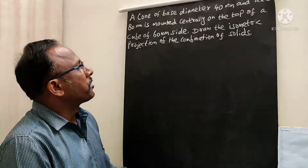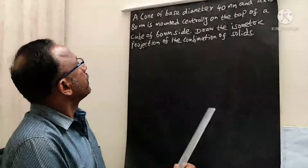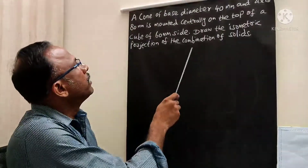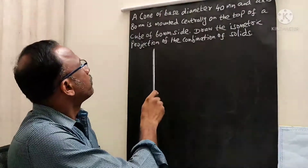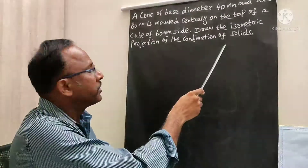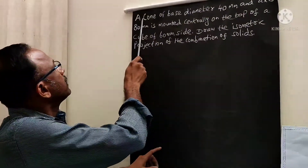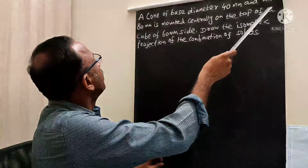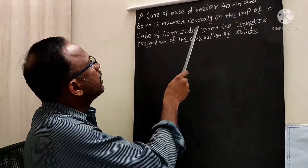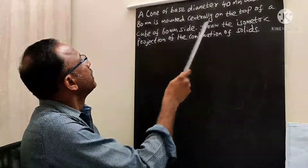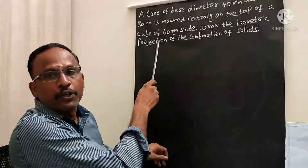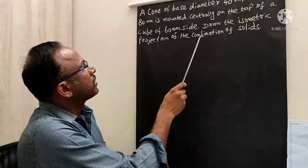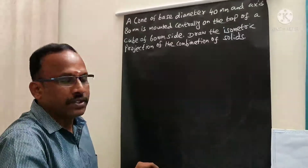Welcome to engineering drawing. Here we are going to discuss the next problem on isometric projection of combined solids. The problem is given like this: a cone of base diameter 40 mm and axis 80 mm is mounted centrally on the top of a cube of 60 mm side. Draw the isometric projections of the combination of solids.